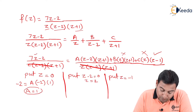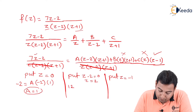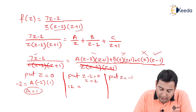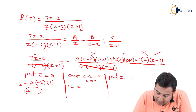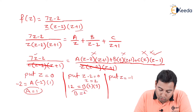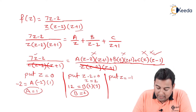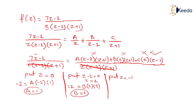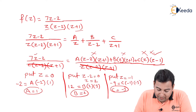Put z equal to 2: 7 times 2 minus 2 equals 12. A will be gone because (2 minus 2) is 0, and C will also be gone, leaving only B. So B times 2 times 3 equals 12, giving B equal to 2. For z equal to minus 1: the LHS gives minus 7 minus 2 equal to minus 9. A and B vanish, leaving C times (minus 1)(minus 3) equals minus 9, so C equals minus 3. We now have A equals 1, B equals 2, C equals minus 3.